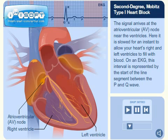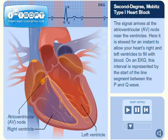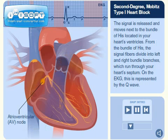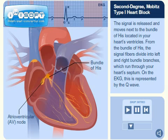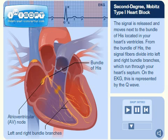Here it is slowed for an instant to allow your heart's right and left ventricles to fill with blood. On an EKG, this interval is represented by the start of the line segment between the P and Q wave. The signal is released and moves next to the bundle of HIS located in your heart's ventricles. From the bundle of HIS, the signal fibers divide into left and right bundle branches, which run through your heart's septum. On the EKG, this is represented by the Q wave.